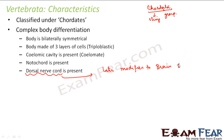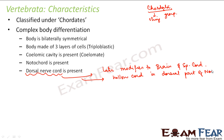The dorsal nerve cord is a hollow chord present in the dorsal part of the notochord. The word 'dorsal' means back. So the notochord is one chord, and the back portion associated with the notochord is known as the dorsal nerve cord. This dorsal nerve cord later modifies to form the brain and spinal cord.